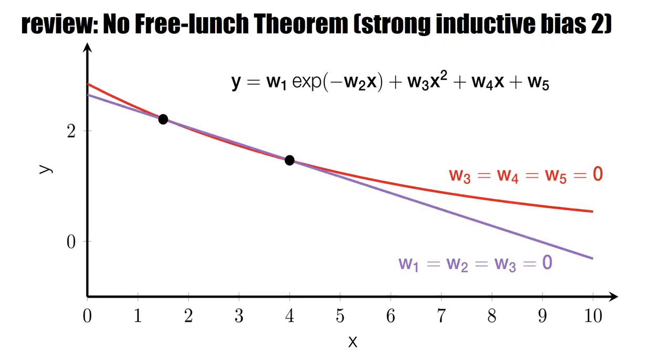Another example of a strong inductive bias would be, for some reason, we know that w1, w2, and w3 are zero. In which case, we are left with w4 times x plus w5, and we can fit with a straight line.